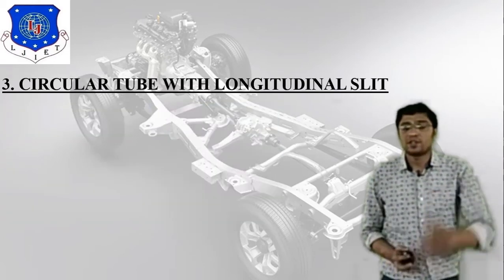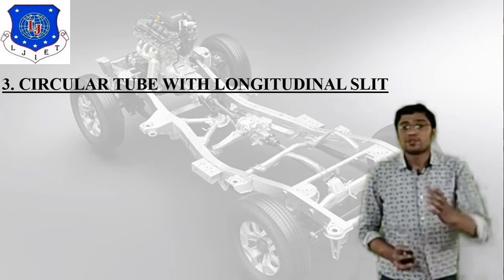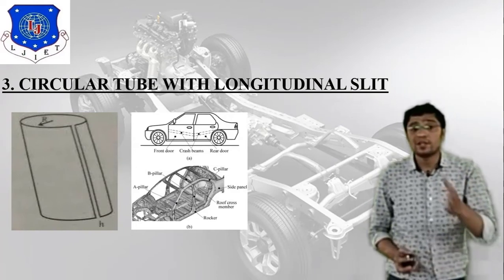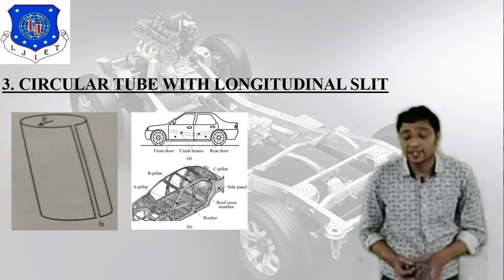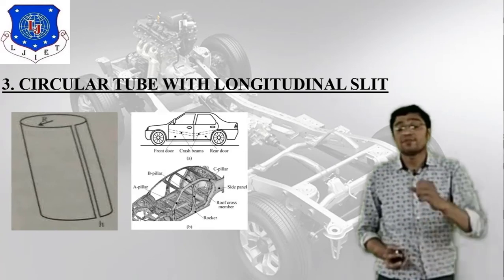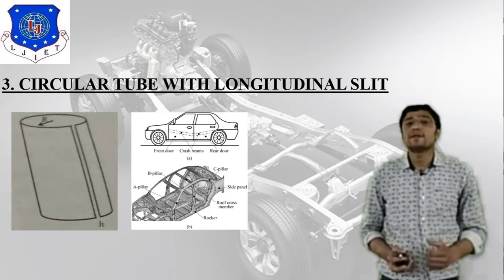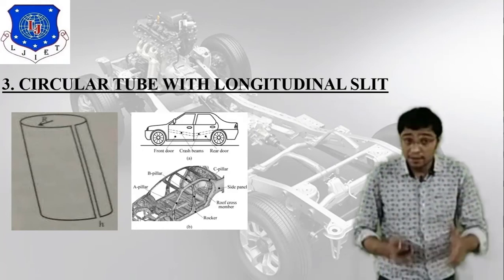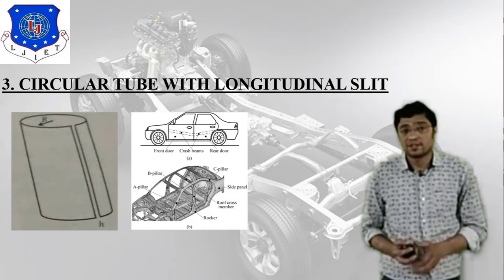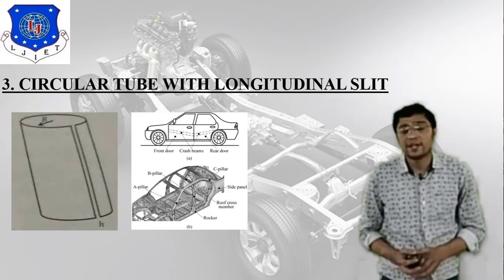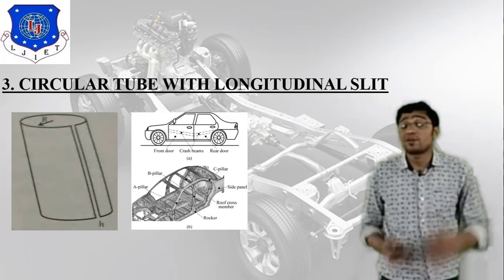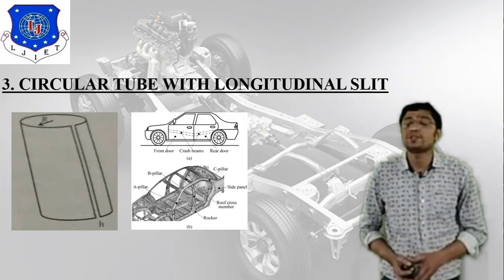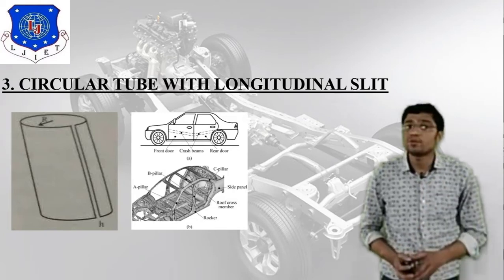The third type is the circular tube with longitudinal slit. In the image, the left side shows the circular tube with longitudinal slit, and the right side shows its application. Different sizes are available for this type. For application purposes, it is useful in the topmost portion of a car for luggage purposes.